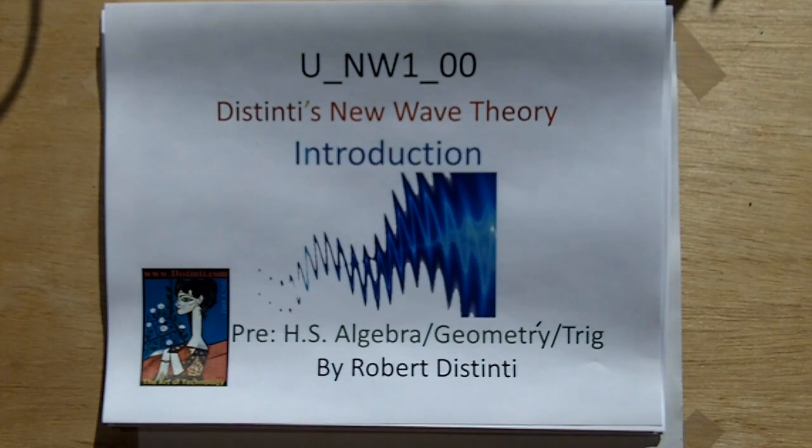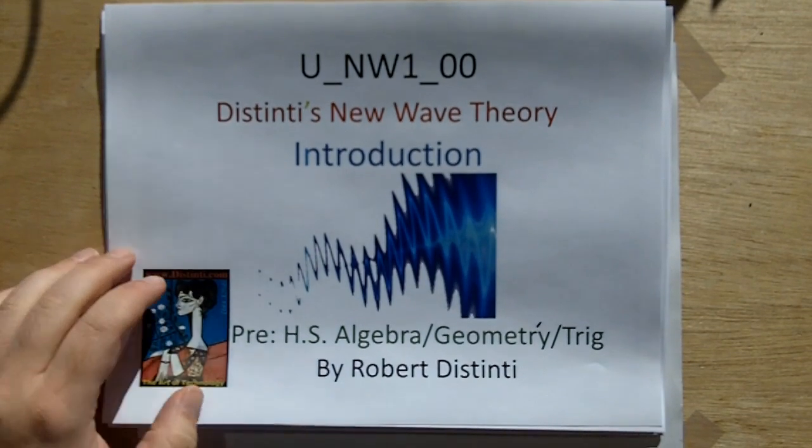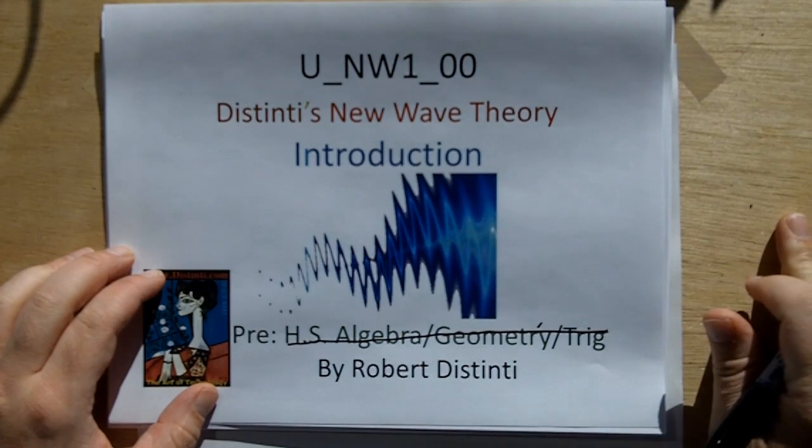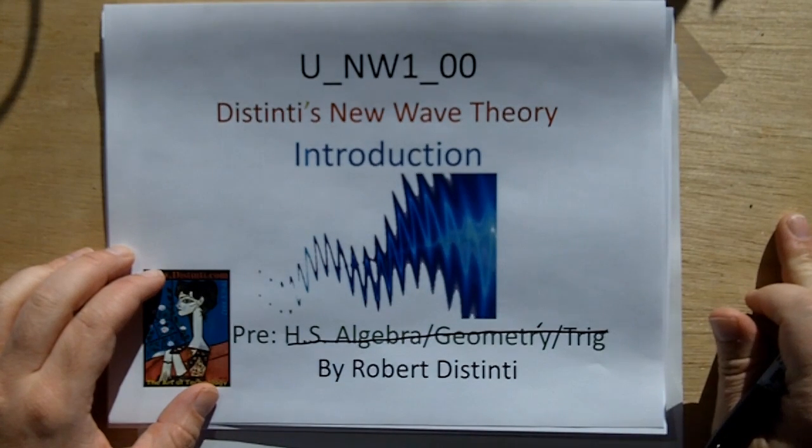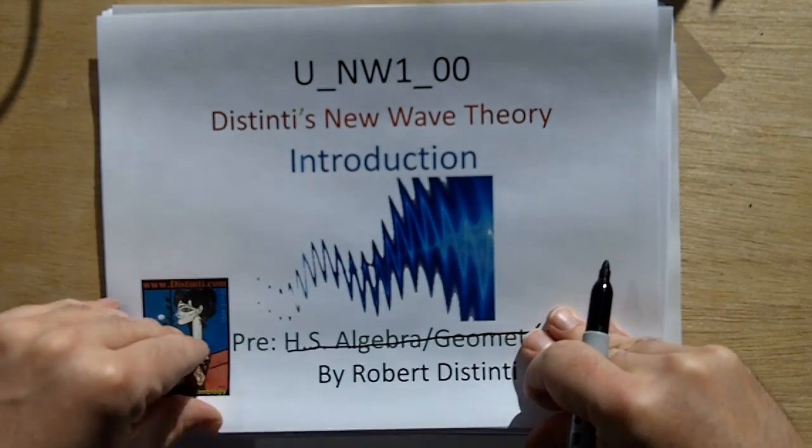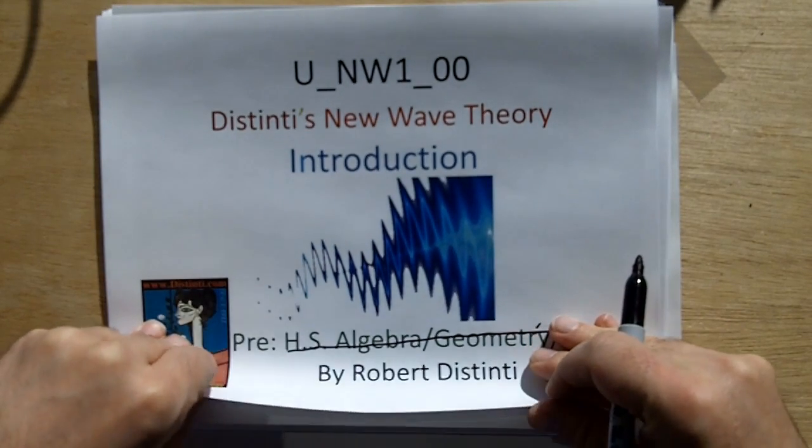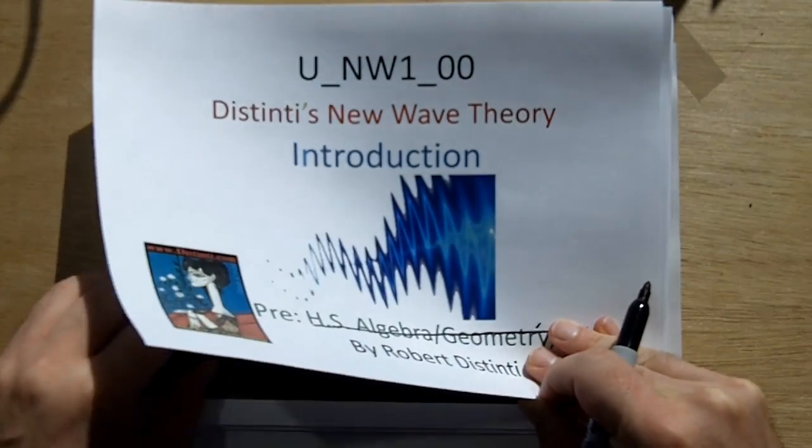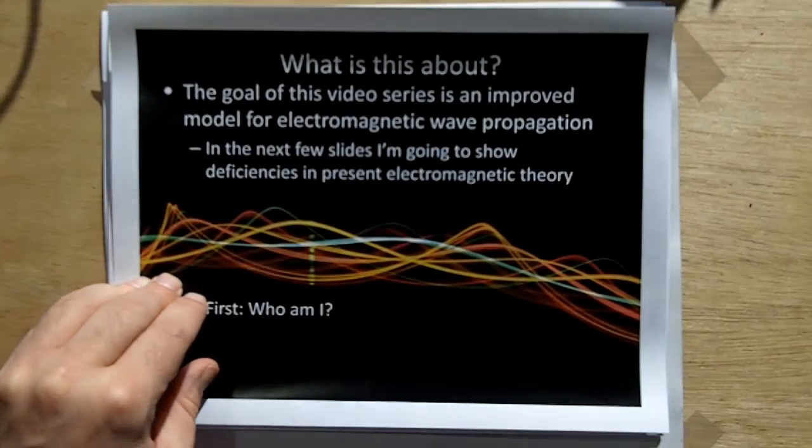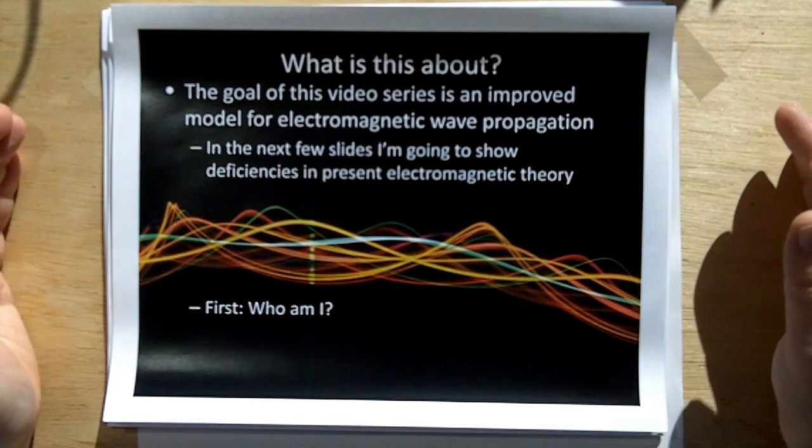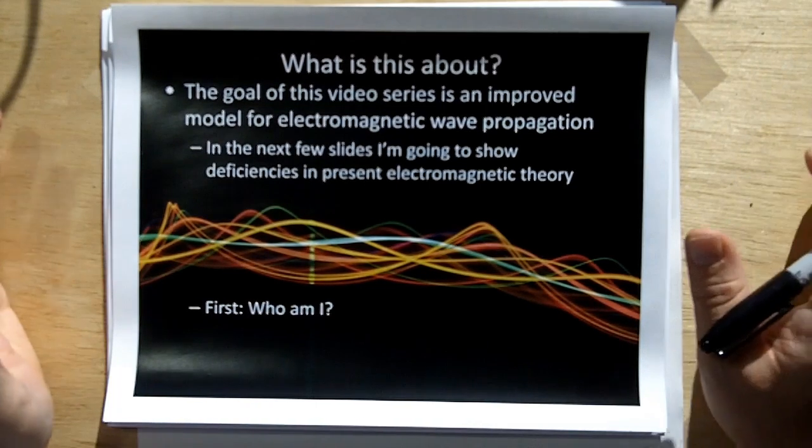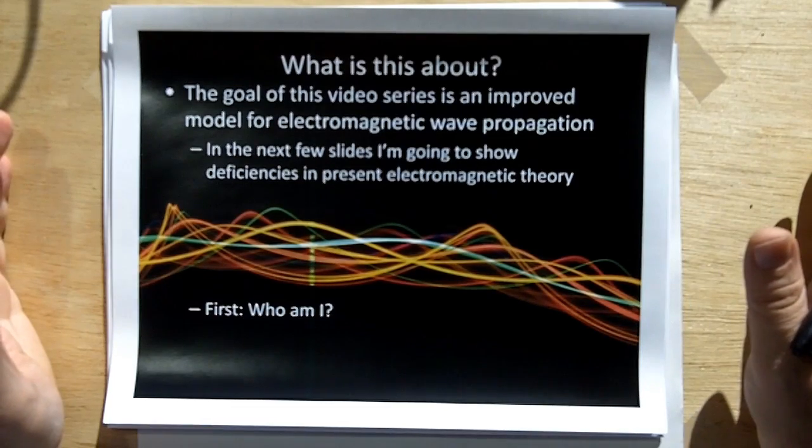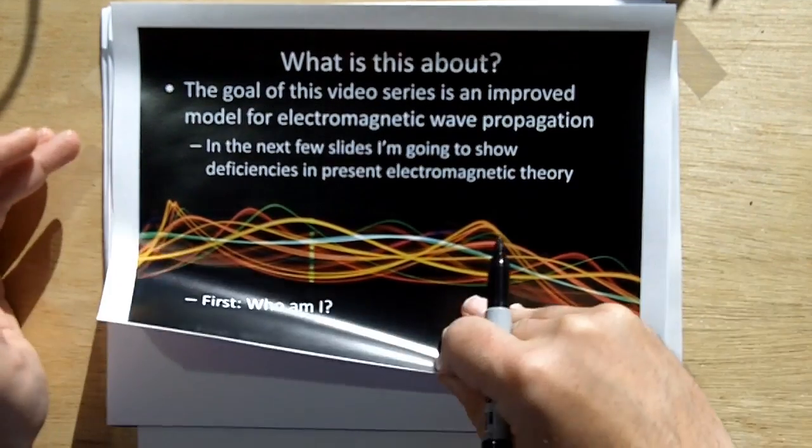Hi, welcome to the New Wave Theory course introduction. This course is actually going to be for people who have at least a bachelor's degree in science or engineering. Other people, I'm trying to make the concept as simple as possible and you'll probably get the gist, but you may not understand the math, that's fine. Goal of this course, to produce an improved model for electromagnetic wave propagation. In the next few slides, I'm going to show you the deficiencies in present electromagnetic theory. But first, let me tell you who I am.